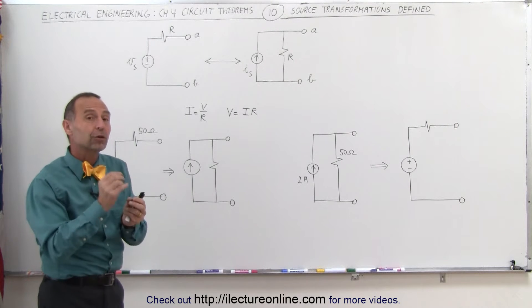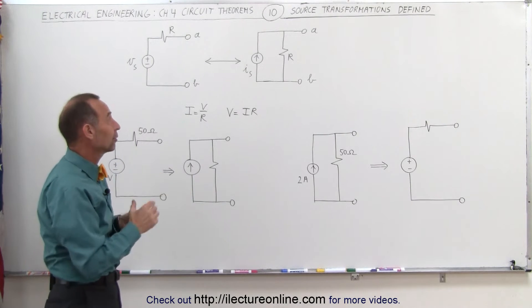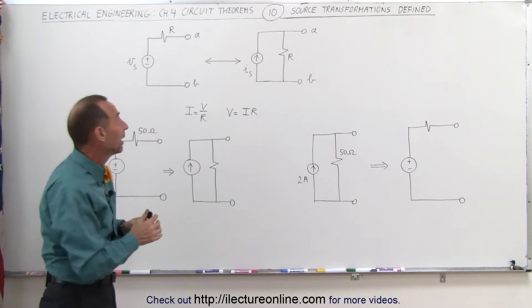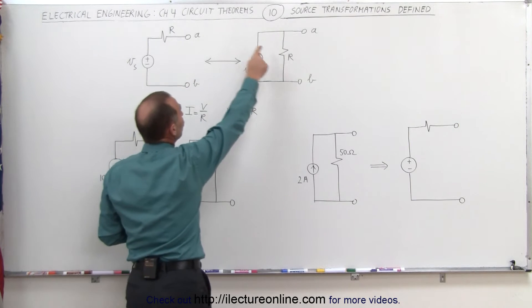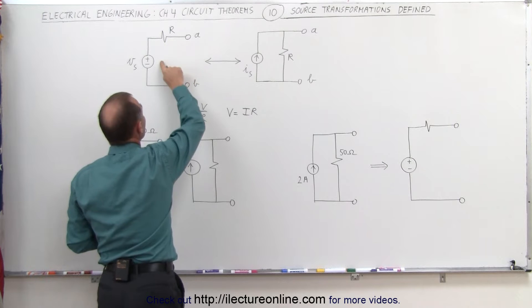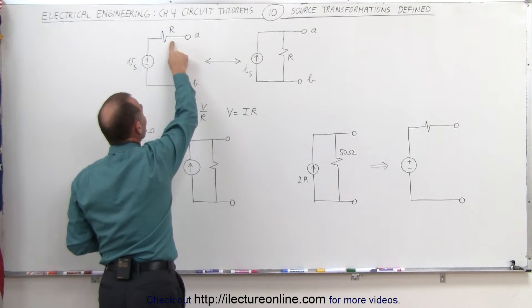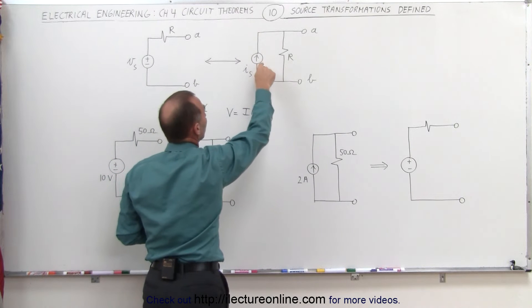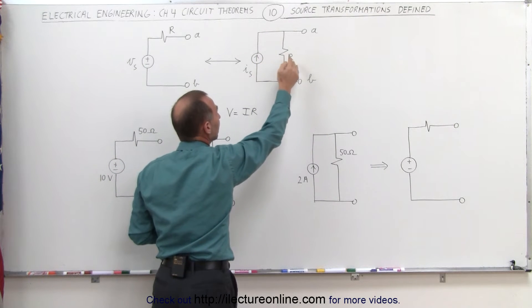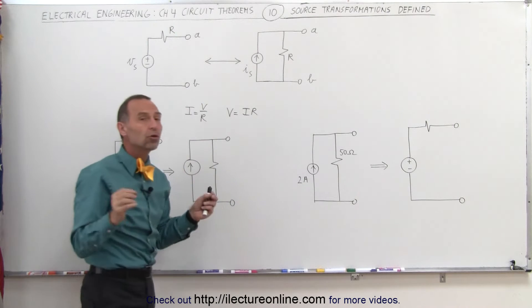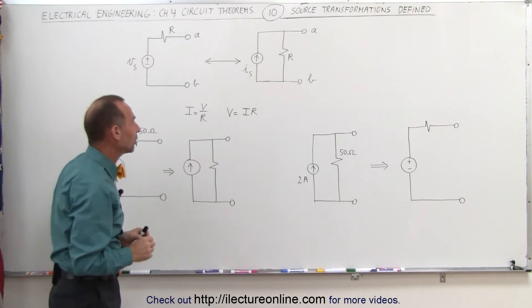How do we find the correct values for the current and the voltage and the correct values for the resistance? Well, it turns out that the value of the resistance doesn't change in the source transformation. Here we have resistors in series with the voltage source and whatever the value is here when we transform it to a current source with a resistor in parallel, the value of the resistance does not change. You use the very same resistance value.